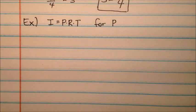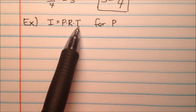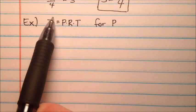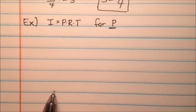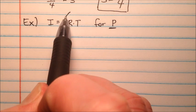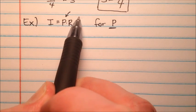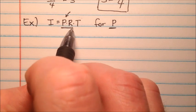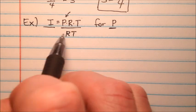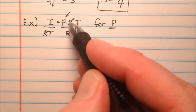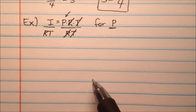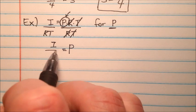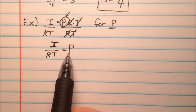In our second example, we have the simple interest formula: I equals prt, where interest equals principal times rate times time. Instead of solving for I, we're looking for p. We want to get p all by itself. There's no plus or minus — it's just prt all being multiplied together. To get p by itself, since it's being multiplied by r and t, I'm going to divide both sides by rt. The r cancels and the t cancels, leaving just p on the right side. So I divided by rt gives us p.